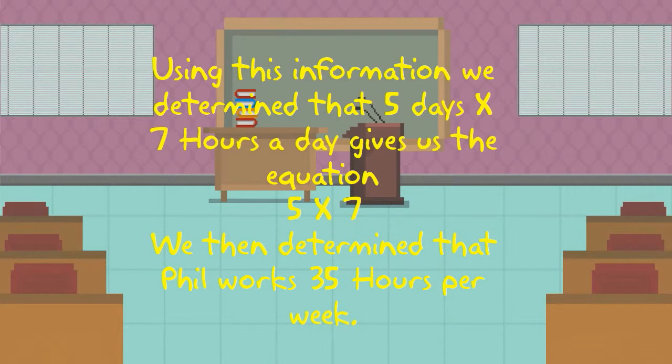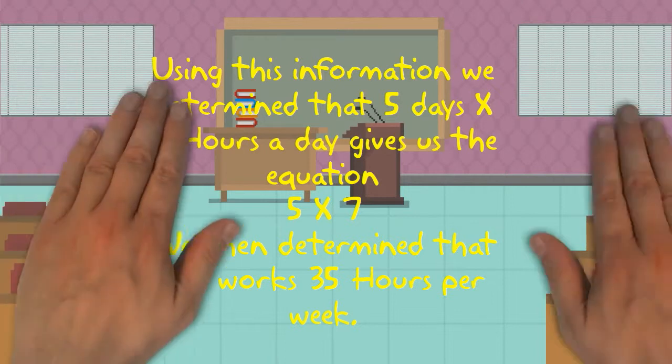We've now applied both of our strategies. Using this information, we determine that five days times seven hours a day gives us an equation of five times seven. We then determine that Phil works a total of 35 hours per week.